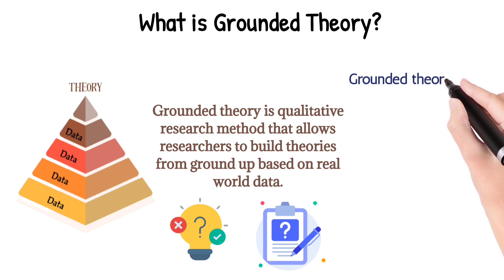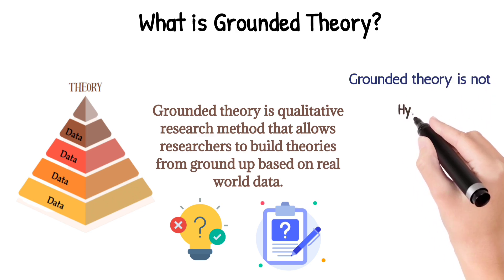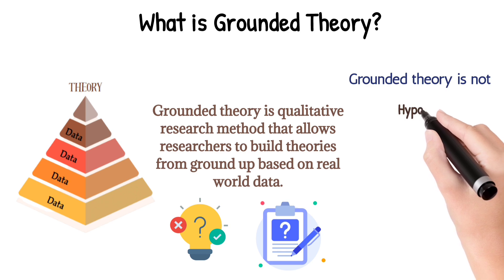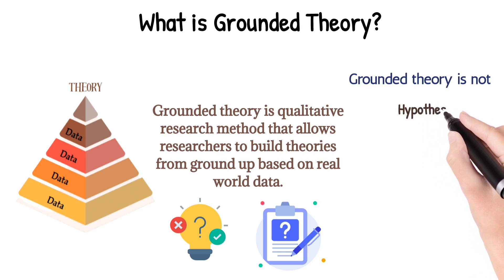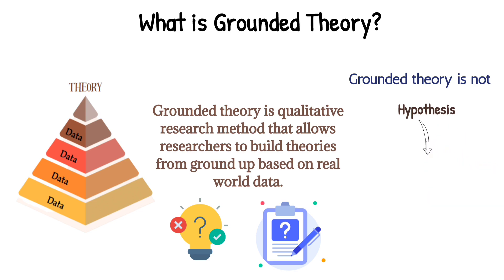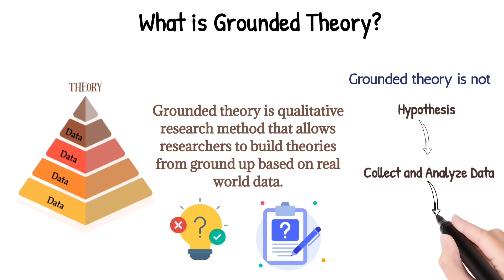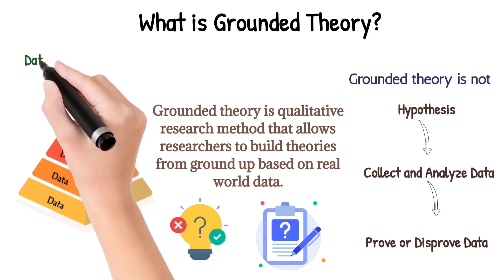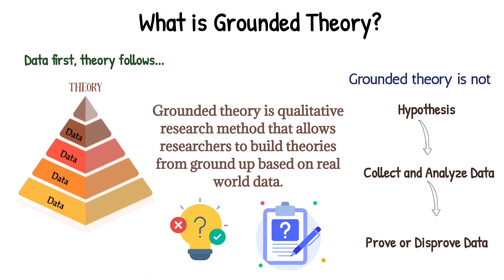Grounded theory is not like other types of research where you might come up with a hypothesis first — for example, 'students who receive immediate feedback on their assignments will demonstrate higher academic performance than those who receive delayed feedback' — then collect data and analyze it to prove or disprove the hypothesis. In fact, data comes first. Theory follows.